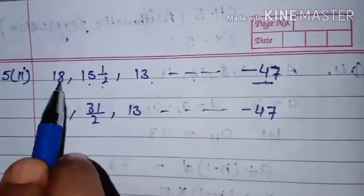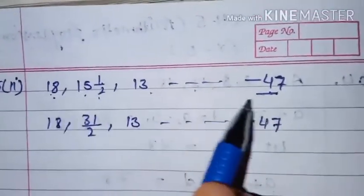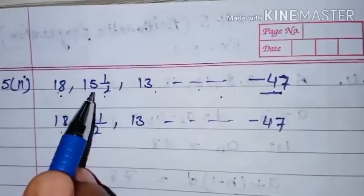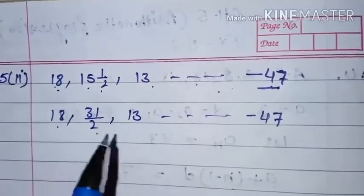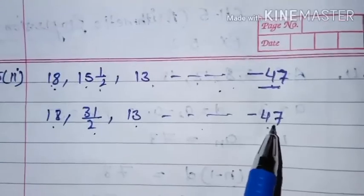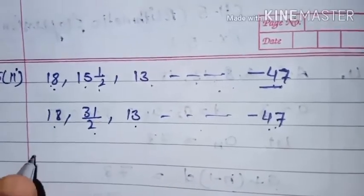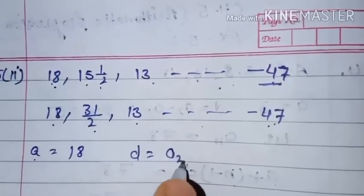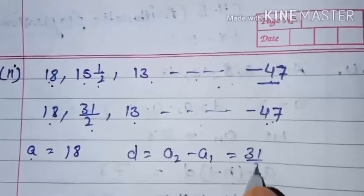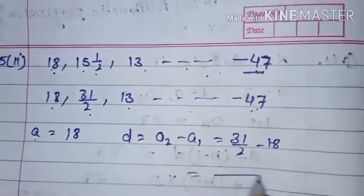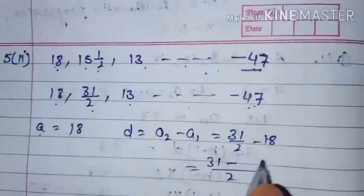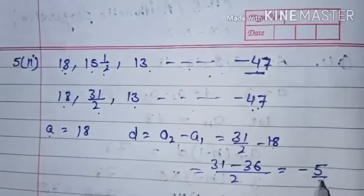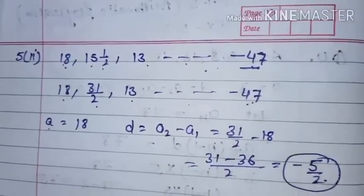We have to find how many terms are there from 18 to minus 47 in this AP. First, simplify 15 and 1/2 as 31 by 2. According to this AP, first term A is 18. To find D: A2 minus A1 equals 31 by 2 minus 18. Taking LCM and solving, we get D equals minus 5 by 2.